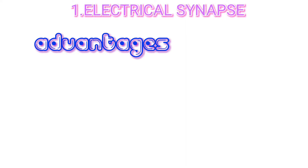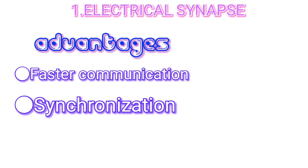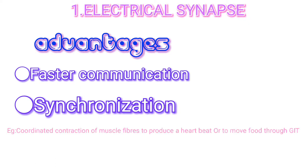Electrical synapses have two main advantages over chemical synapses. First, electrical synapses provide faster communication — because the action potential conducts directly through gap junctions, electrical synapses are faster than chemical synapses. Second, a large number of neurons or muscle fibers can produce action potentials in unison if they are connected by gap junctions. For example, the coordinated contraction of muscle fibers to produce a heartbeat, or to move food through the GIT.